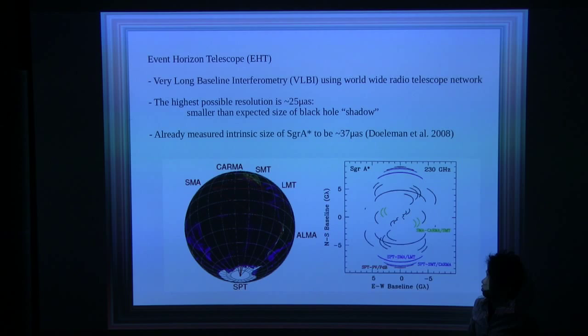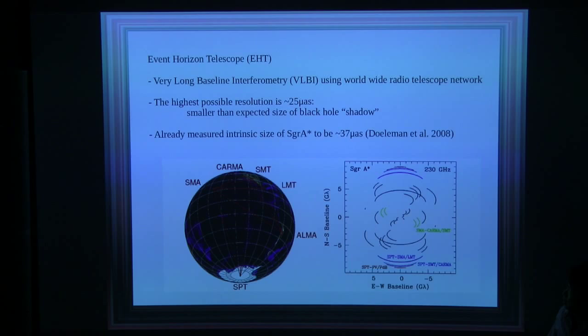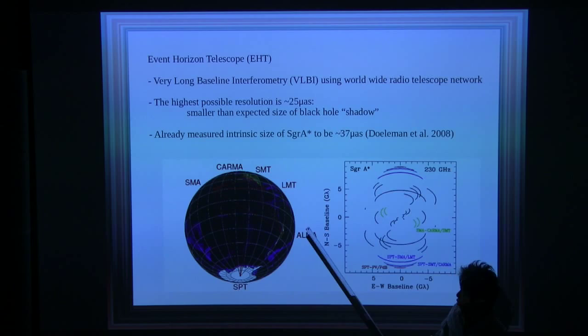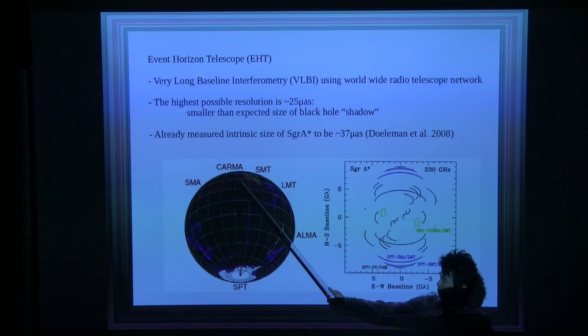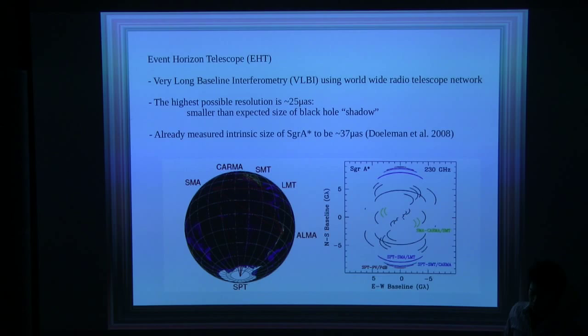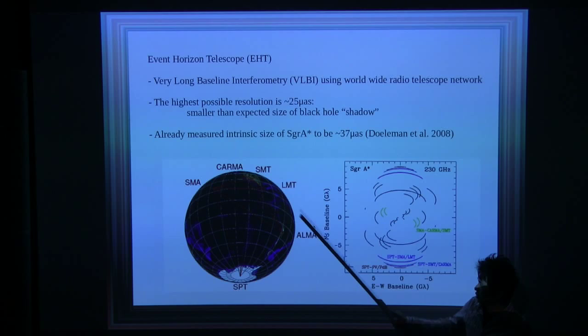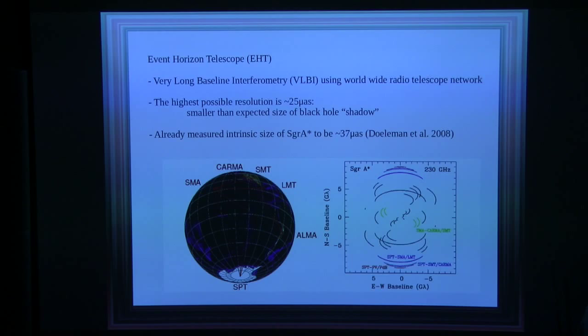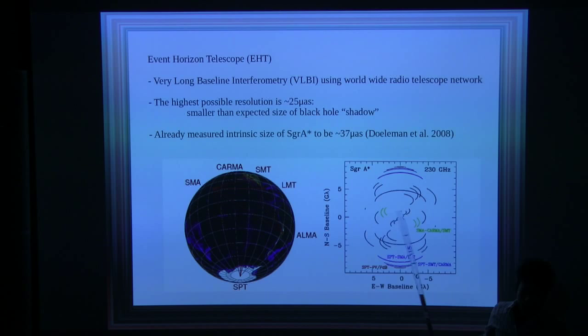Here's more about the Event Horizon Telescope. It is very long baseline interferometry, VLBI, using a worldwide radio telescope network, giving it effectively the size of the Earth. There are several stations that make up EHT; not all are deployed, but recently LMT has been added, CARMA has been removed, and ALMA and the South Pole Telescope will be deployed soon, with full observations in 2017. There are also two more stations in France and Spain. The highest possible resolution is about 25 micro-arcseconds — less than the 50 micro-arcsecond event horizon of Sgr A* — as high resolution as identifying an orange on the moon's surface.